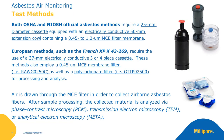Regulatory testing methods in the US and Europe have similar requirements with some key differences. Both the OSHA and NIOSH official asbestos methods require a 25 millimeter diameter cassette, along with an electrically conductive 50 millimeter extension cowl, which contains a 0.45 to 1.2 micron MCE filter membrane. European methods, such as the French XPX 43269, require the use of a 37 millimeter electrically conductive 3 or 4 piece cassette. These methods also employ a 0.45 micron MCE membrane filter, as well as a polycarbonate filter for processing and analysis.